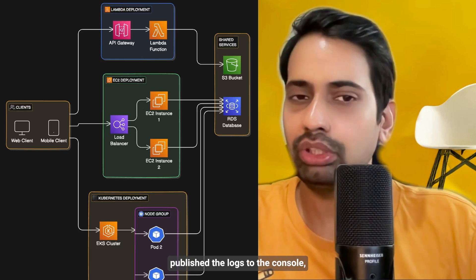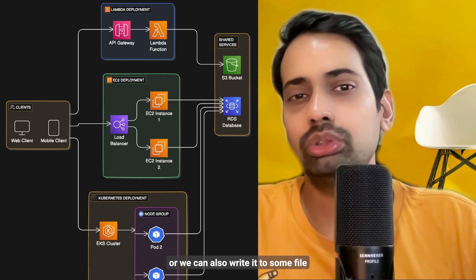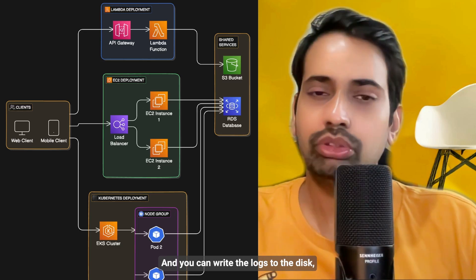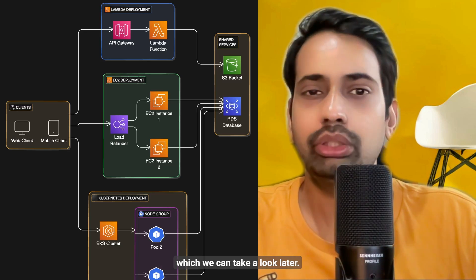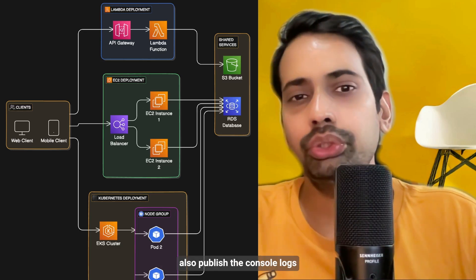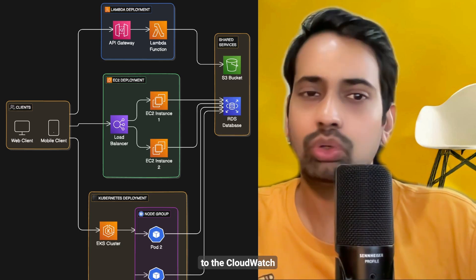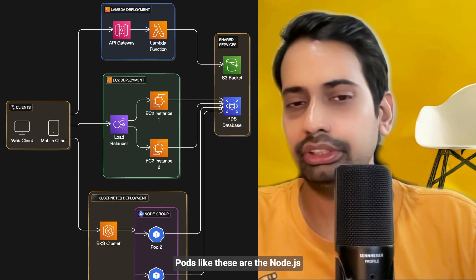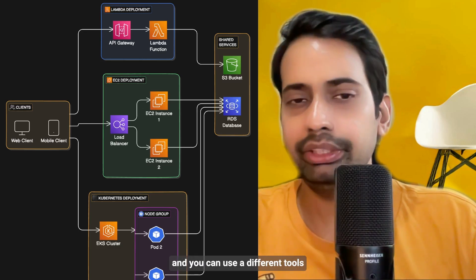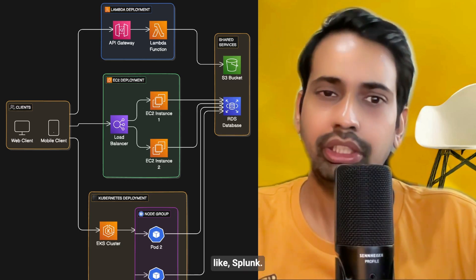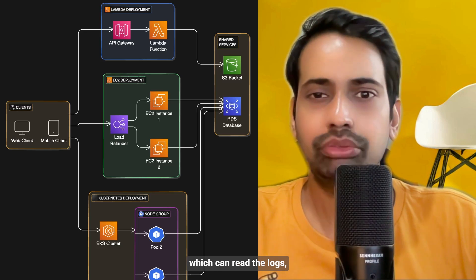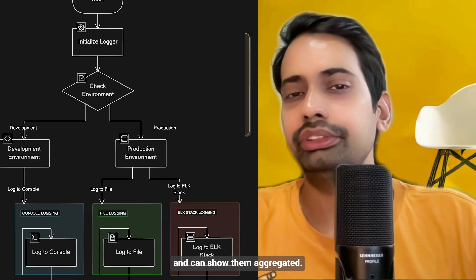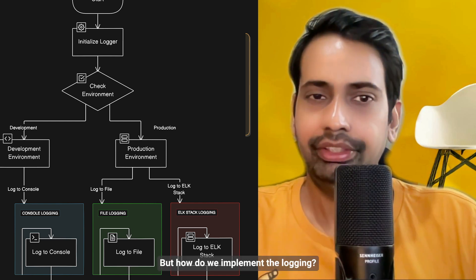On EC2 you can publish logs to the console, or write them to a file on disk. You can also publish console logs to CloudWatch. For Kubernetes container pods, you can use different tools like Splunk, which can read the console output logs and show them aggregated.